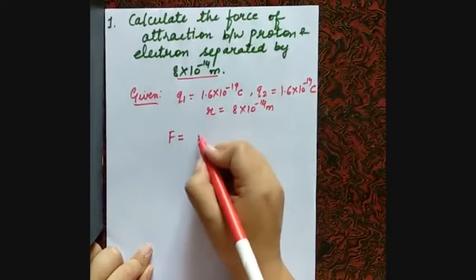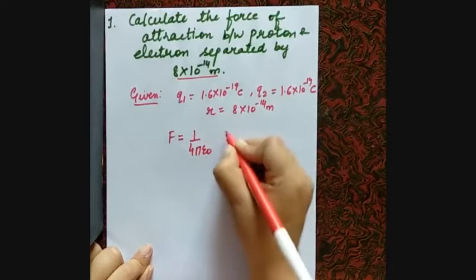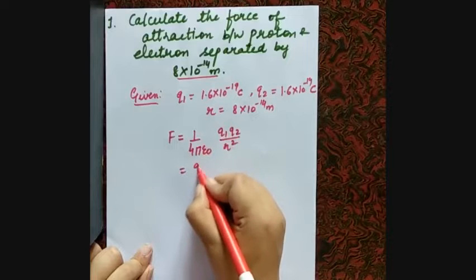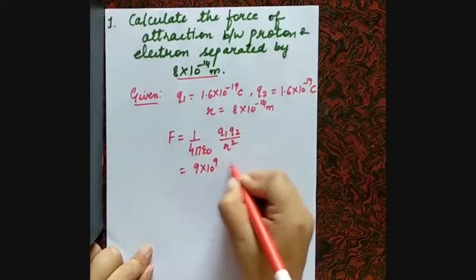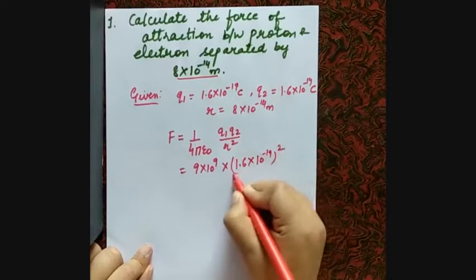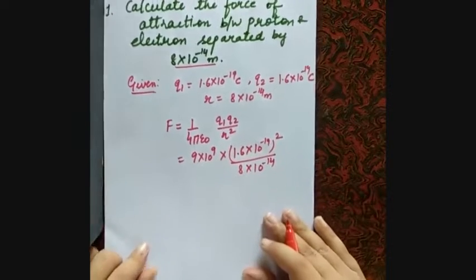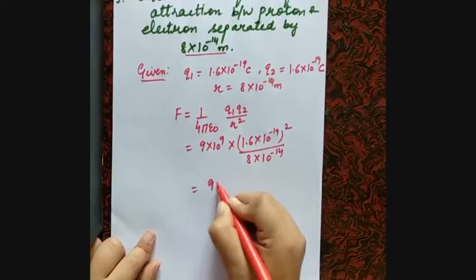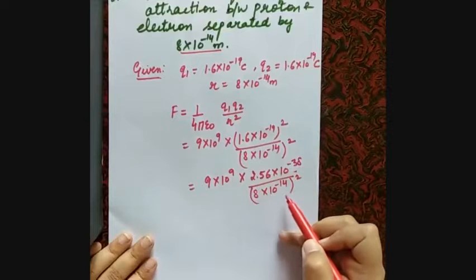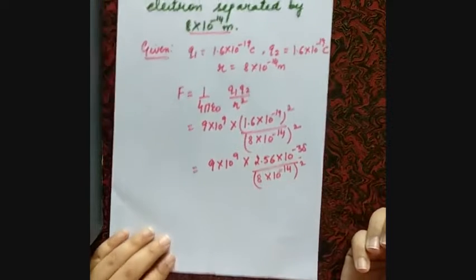We use the formula F = 1/(4πε₀) × Q1Q2/r². The value of 1/(4πε₀) is 9×10⁹. So we calculate: 9×10⁹ × (1.6×10⁻¹⁹)² divided by (8×10⁻¹⁴)². That gives us 9×10⁹ × 2.56×10⁻³⁸ divided by 64×10⁻²⁸. Then it's a simple calculation.